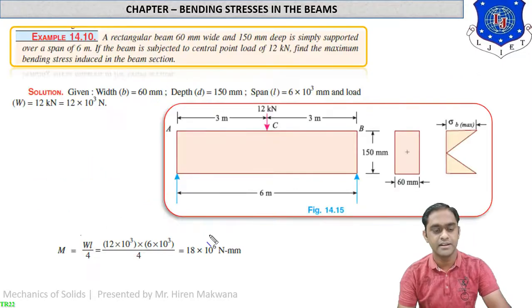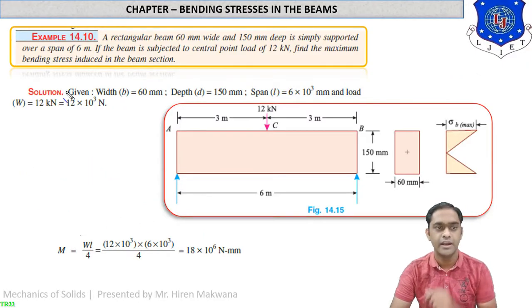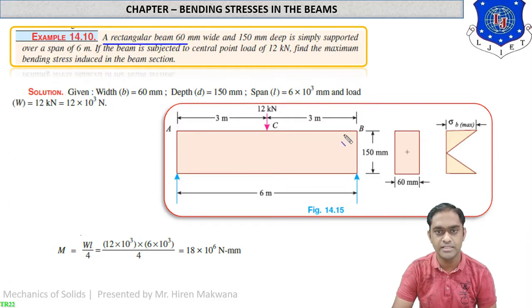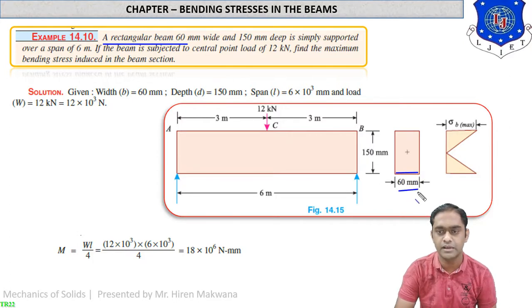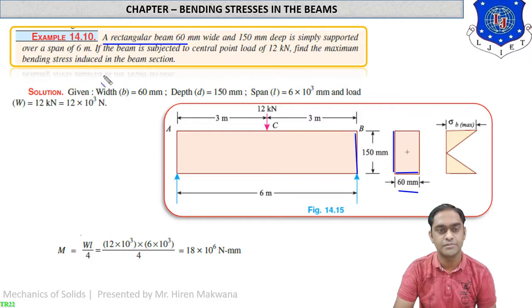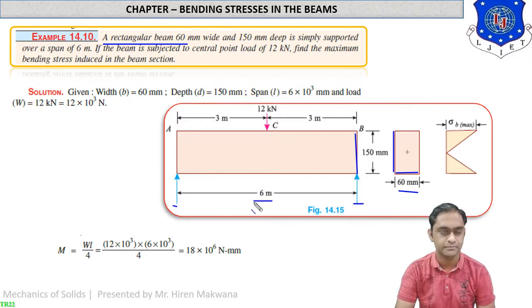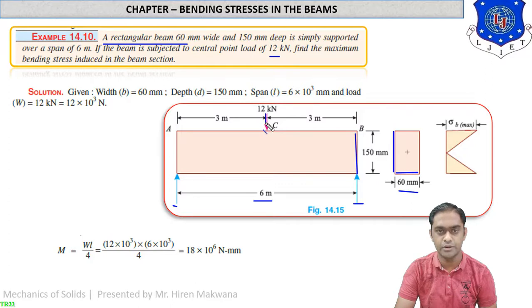Let us start some numericals. Example 14.10: A rectangular beam 60 mm wide and 150 mm deep is simply supported over a span of 6 meters. The beam is subjected to a central point load of 12 kN acting at 3 meters from each support. Find the maximum bending stress induced in the beam section.